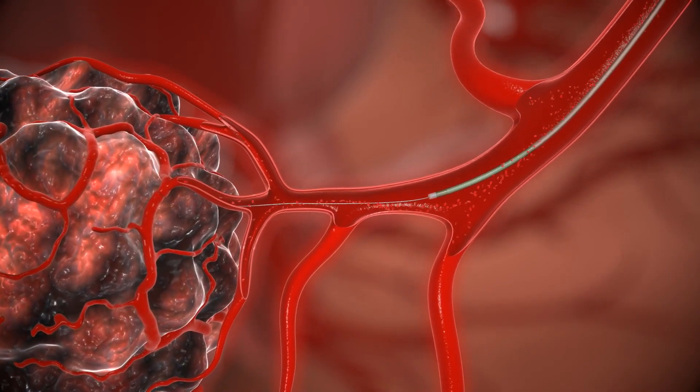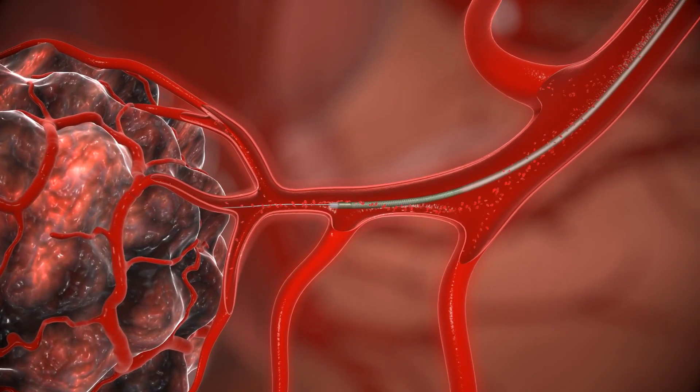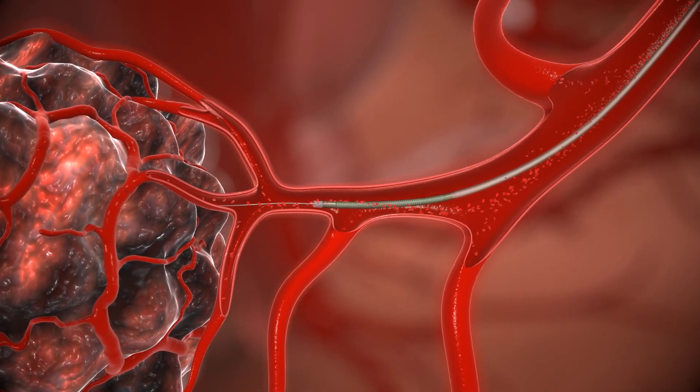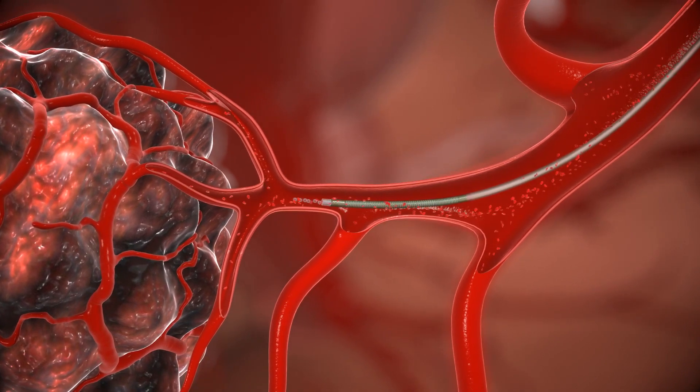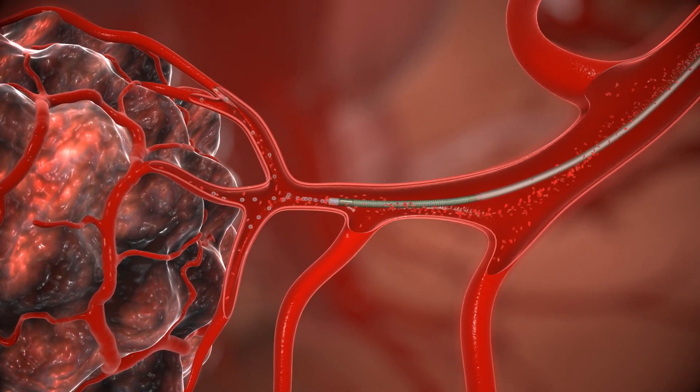Once the microcatheter tip has reached the desired target, which in this case is a feeder vessel of a hepatic tumor, the guide wire is removed and treatment embolics are injected through the microcatheter lure.